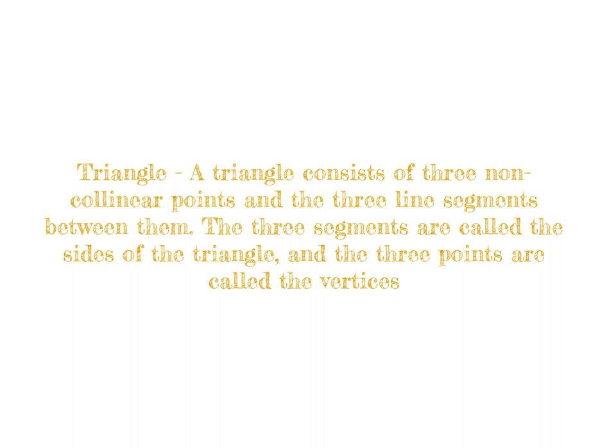Next, we have triangle, and a triangle consists of three non-collinear points and the three line segments between them. The three segments are called the sides of the triangle, and the three points are called the vertices.